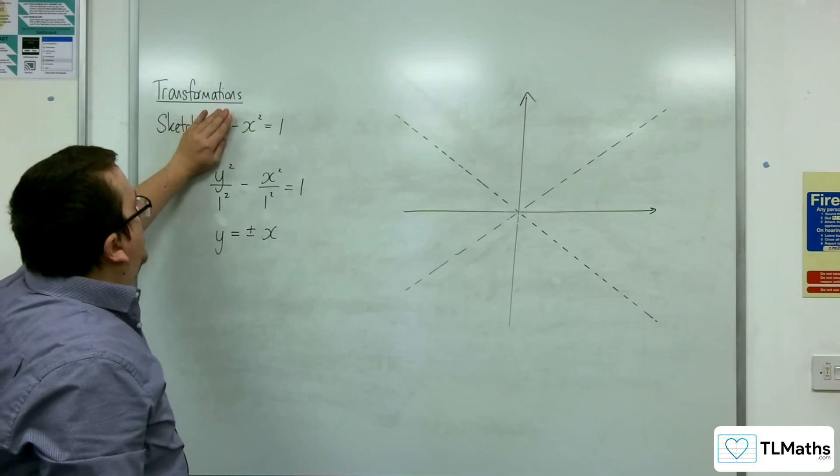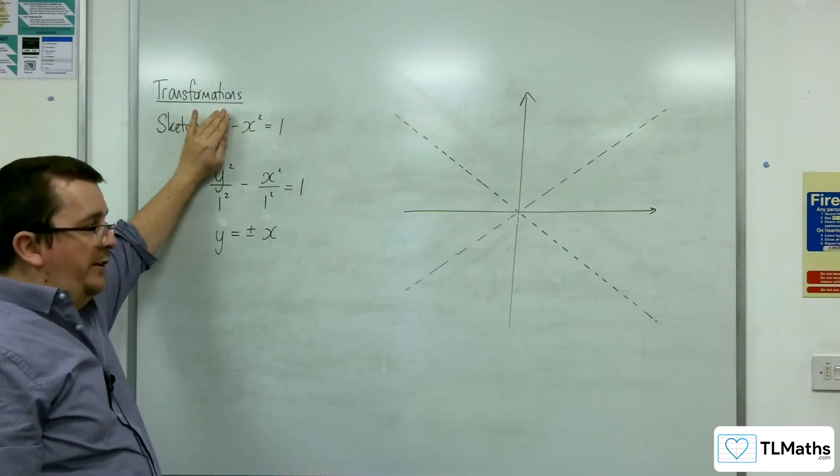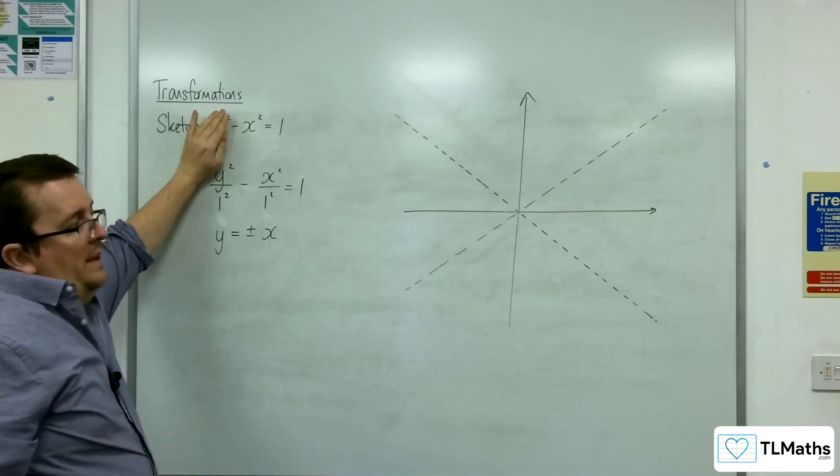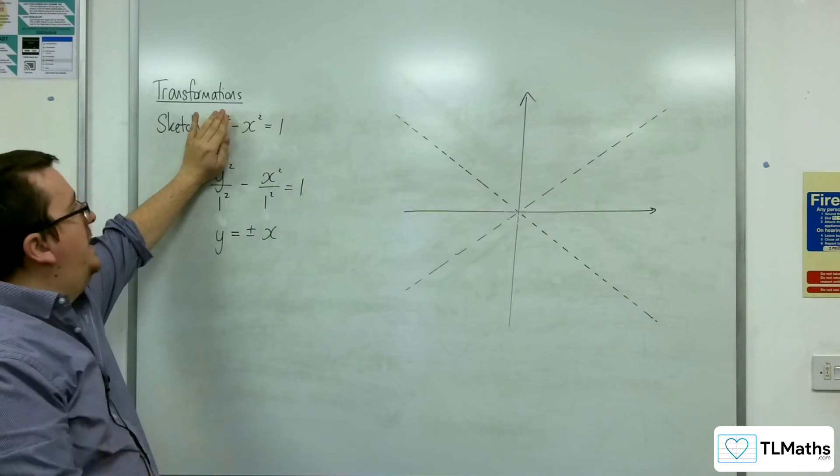So, when x is 0, you would come up against the problem of minus x squared equaling 1. So, x squared would have to equal minus 1, but there's no real solutions to that. So, this curve doesn't cross the x axis.